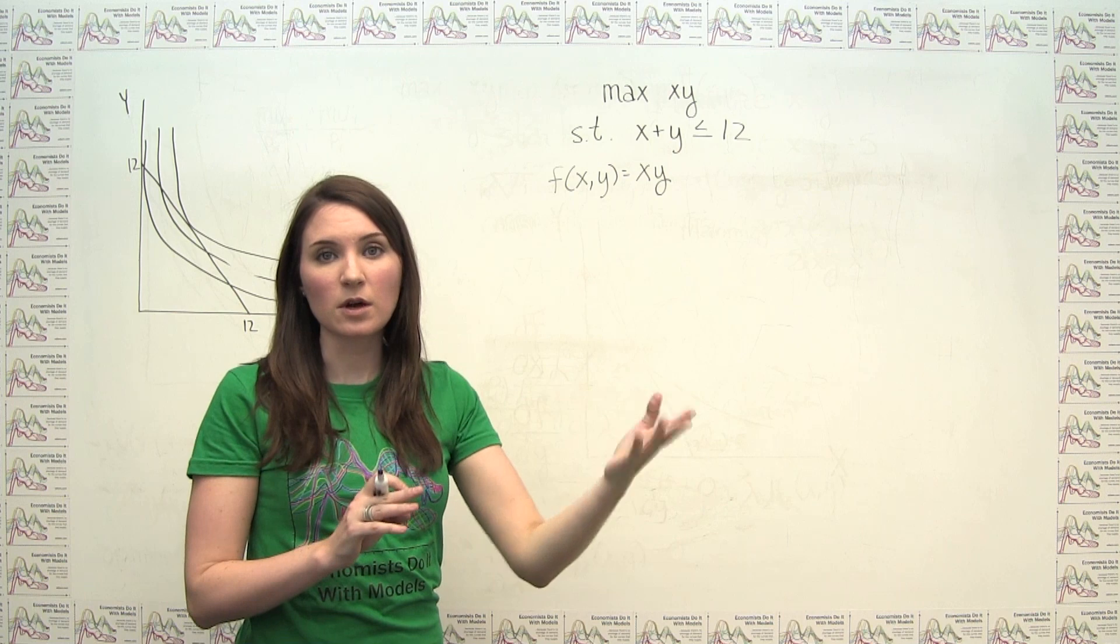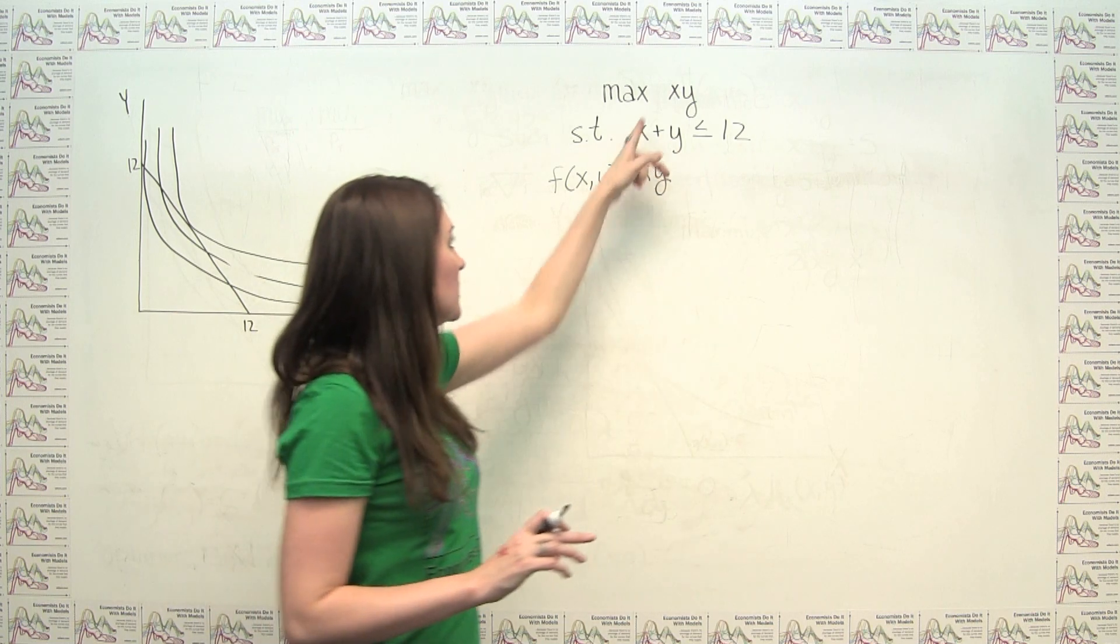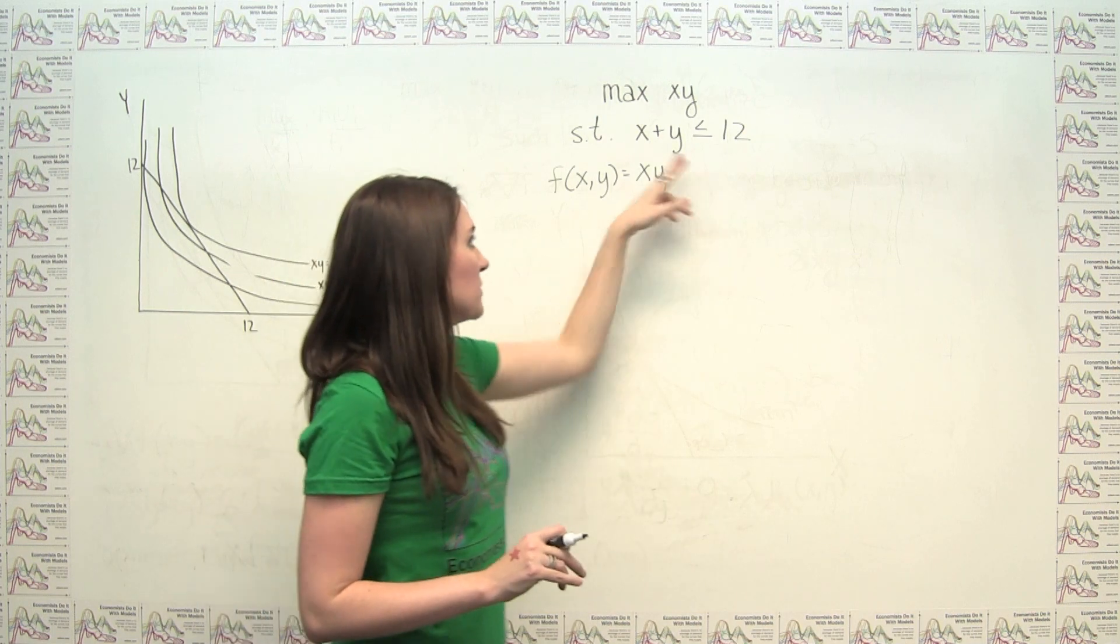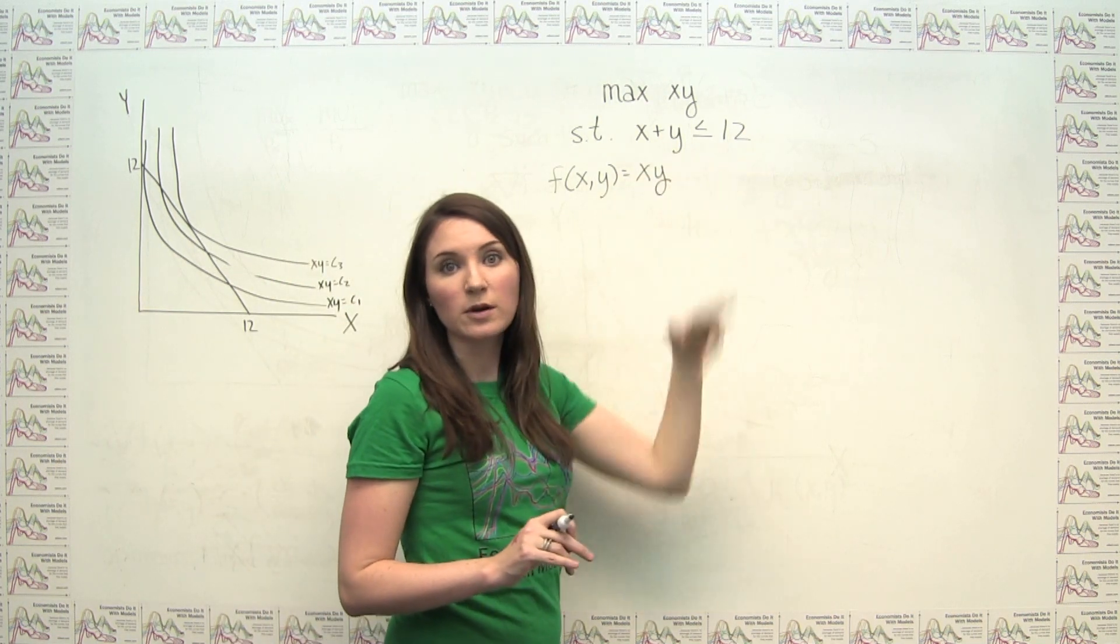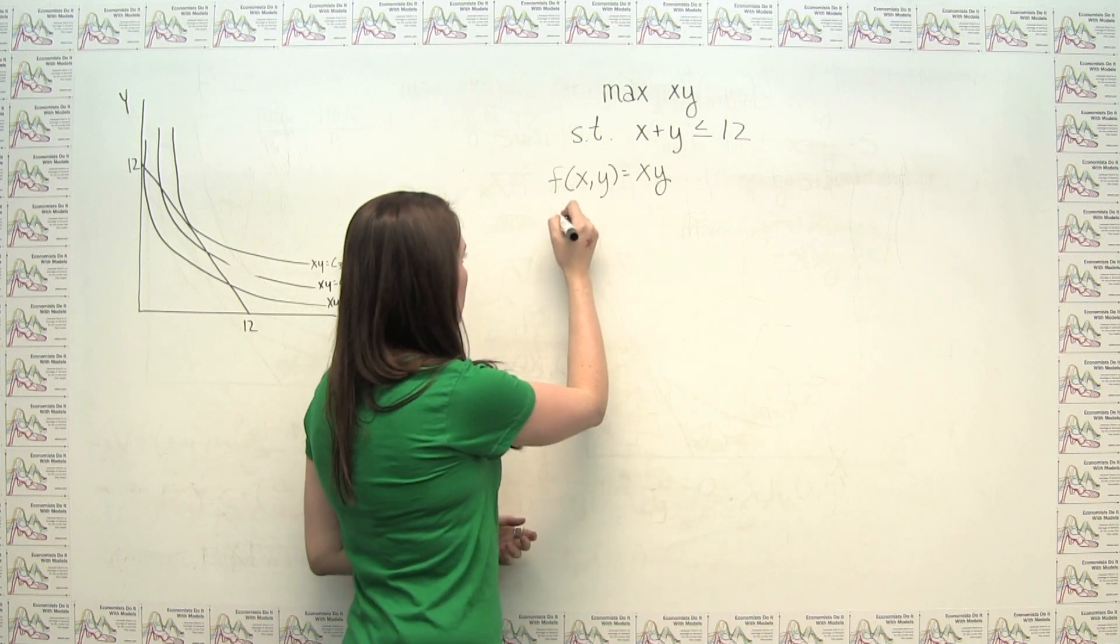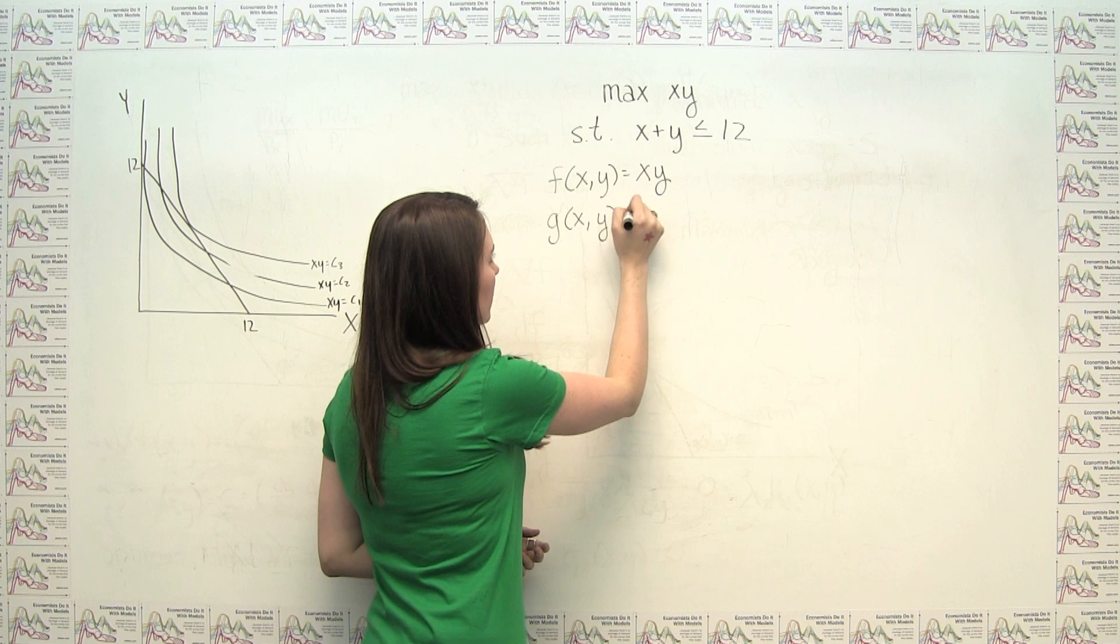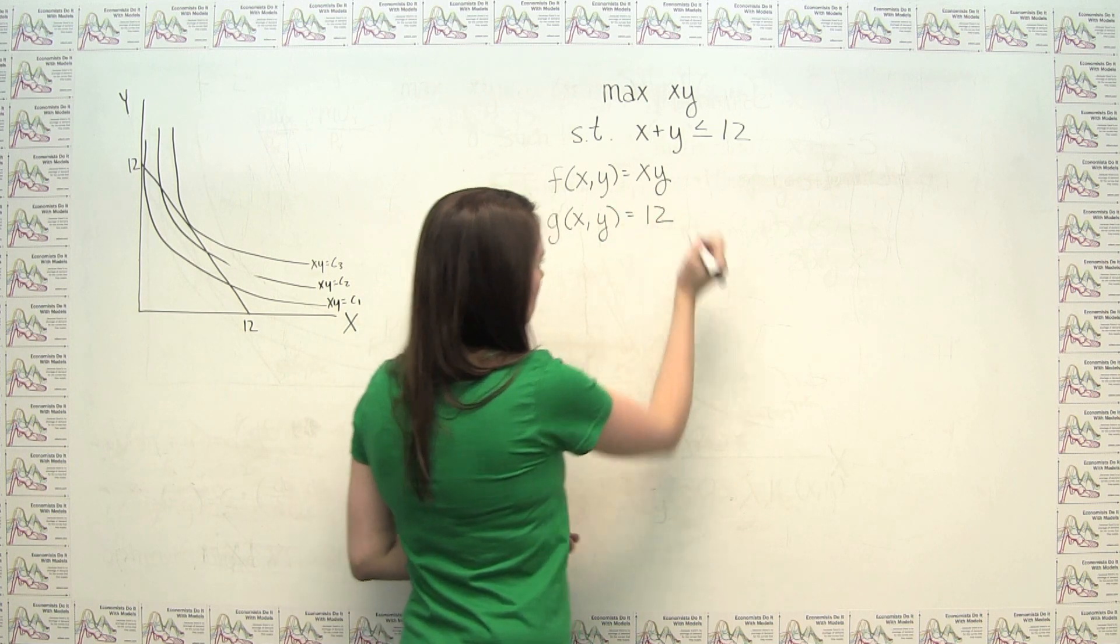Because we can always add a little bit to either x or y to get a bigger value here. So intuitively, at the optimum, we're going to be using all of these 12 units, and we can actually say that our relevant constraint is where g of xy equals 12.